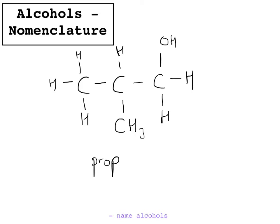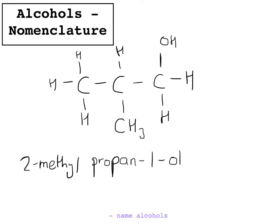Then you've got to think about whether there's anything coming off that carbon chain that isn't an OH group. You can see there is — there's a methyl group coming off the second carbon. We call this the second carbon based on the fact that the OH group is on the first carbon. We always name where the OH group is first, so we call this propan-1-ol. The 'ol' comes from the fact it's an alcohol, and the '1' from the fact it's on the first carbon. The methyl group is on the second carbon, so we call this 2-methylpropan-1-ol.